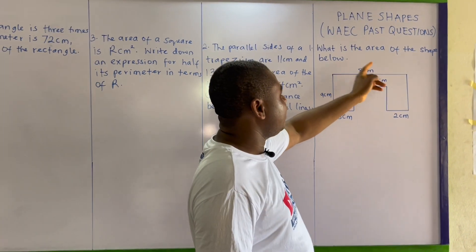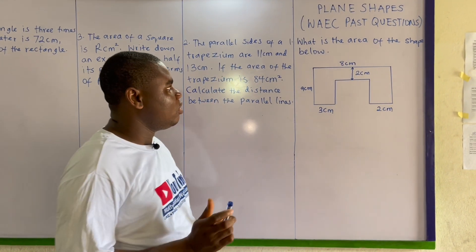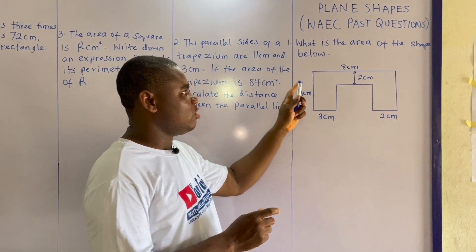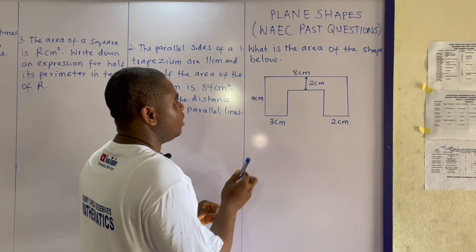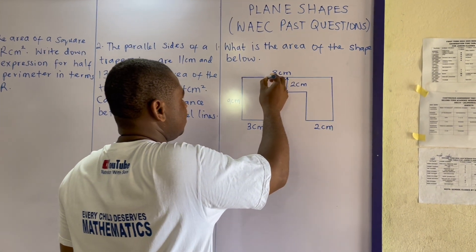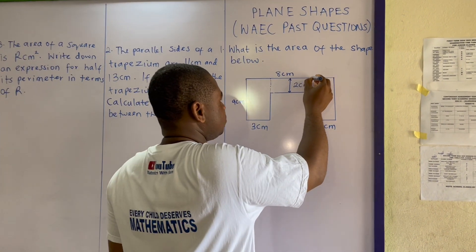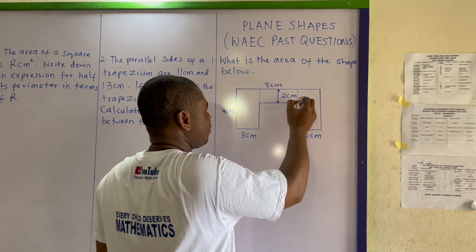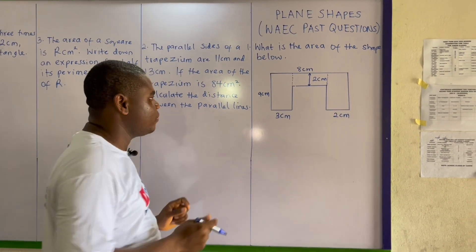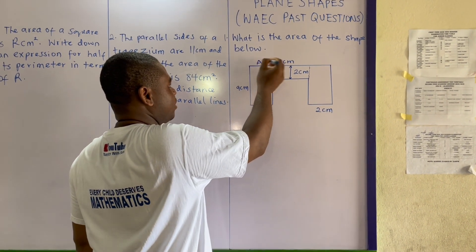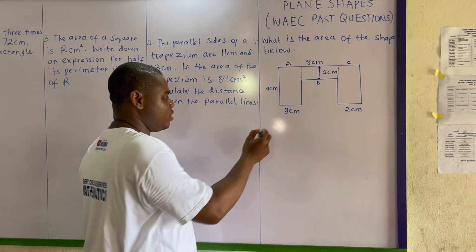For the first example: what is the area of the shape below? This shape is a composite shape. To calculate the area, I will have to separate it — and also do the same thing here. That means in this case we have three different shapes: A, B, and C.